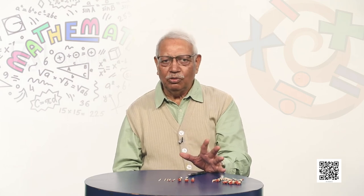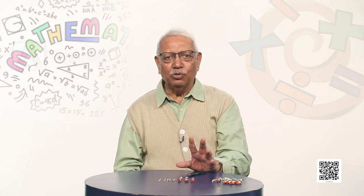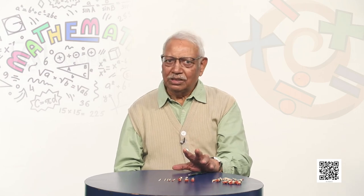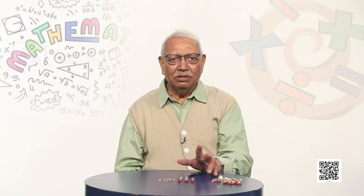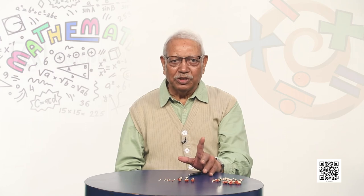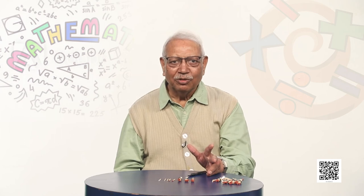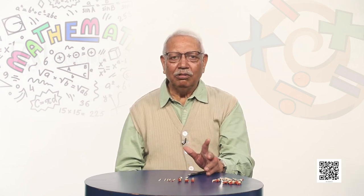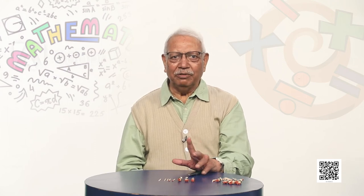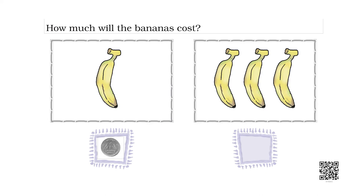We have learnt how to write numbers and how to answer the question how many. Now let us find out: if a banana costs 1 rupee, how much would 3 bananas cost? 1 banana — 1 rupee, another banana — 1 rupee, another banana — 1 rupee. So we have 1, 2, 3. It means these 3 bananas will cost us 3 rupees.